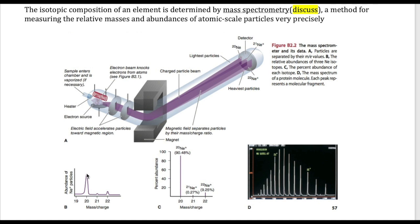For neon, we can see that isotope 20 has the most particles — it's the most abundant — followed by isotope 22, then isotope 21. Another way the plot can be shown is with lines instead of peaks, but the information given is the same.